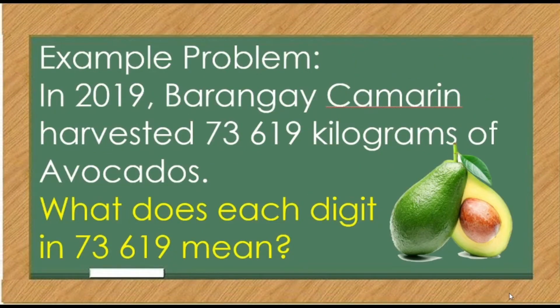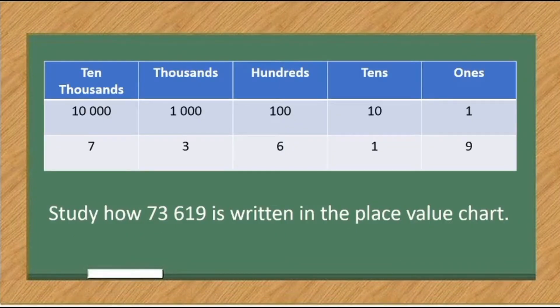I will give you an example problem. In 2019, Barangay Camarine harvested 73,619 kilograms of avocados. What does each digit in 73,619 mean? This is a place value chart. Study how 73,619 is written in the place value chart.